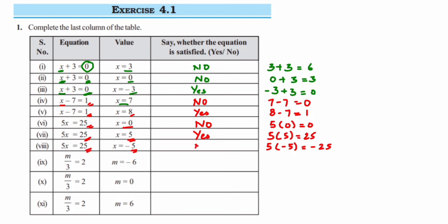Now next we have m is equal to minus 6. So when I substitute here, I'll get minus 6 upon 3. When you cancel this, the answer is minus 2. But here we have positive 2, so this is no.